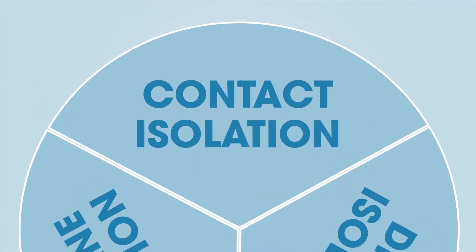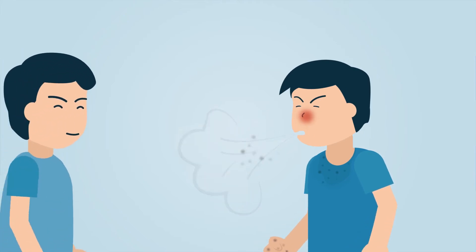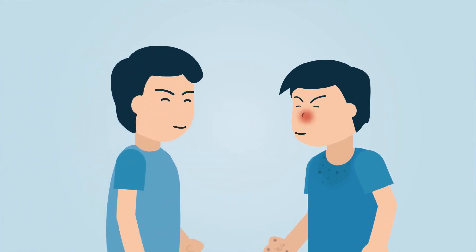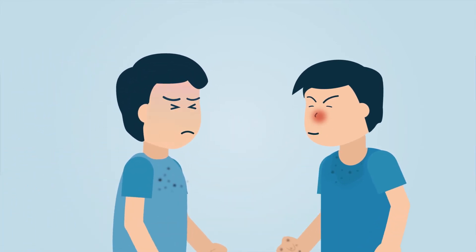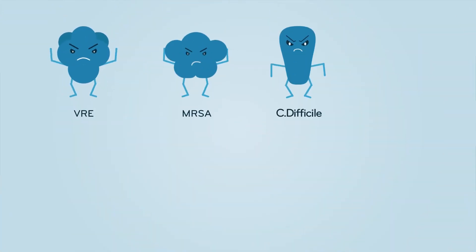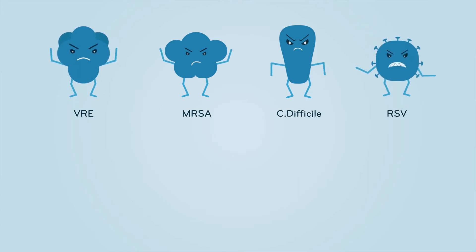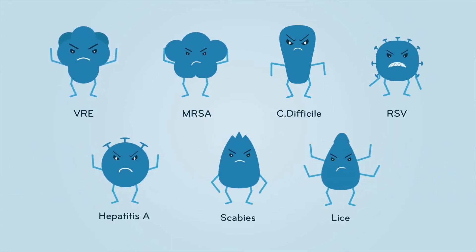Third, contact isolation is used when a patient has an infection or is colonized with germs that can be transmitted from direct contact with the patient or their environment. Examples include VRE, MRSA, C. difficile, RSV, hepatitis A, scabies, or lice. Wear gloves and gown for each entry into the room.